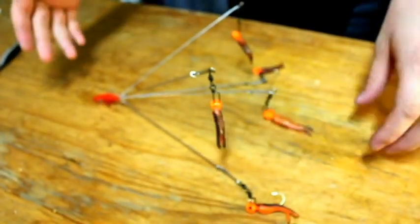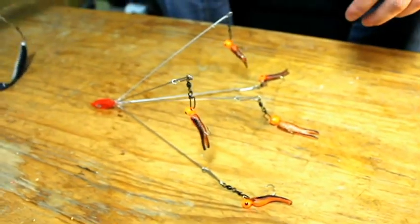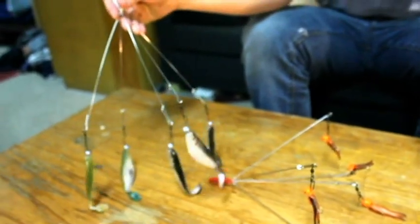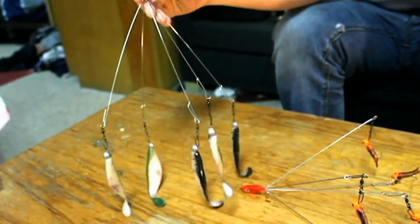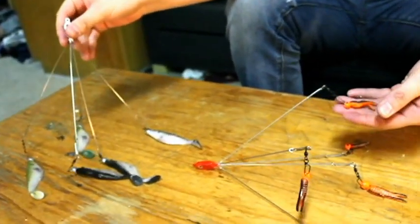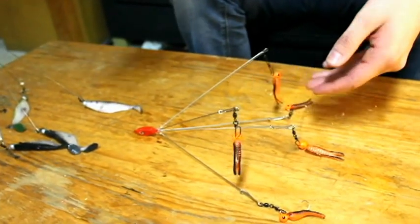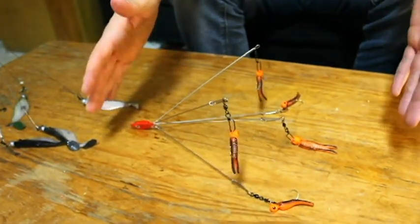And there's your whole Alabama rig, there's the setup. I also have another one set up right here. This is for bass, this is more for a walleye style rig, a little smaller but you can still use it for bass fishing.